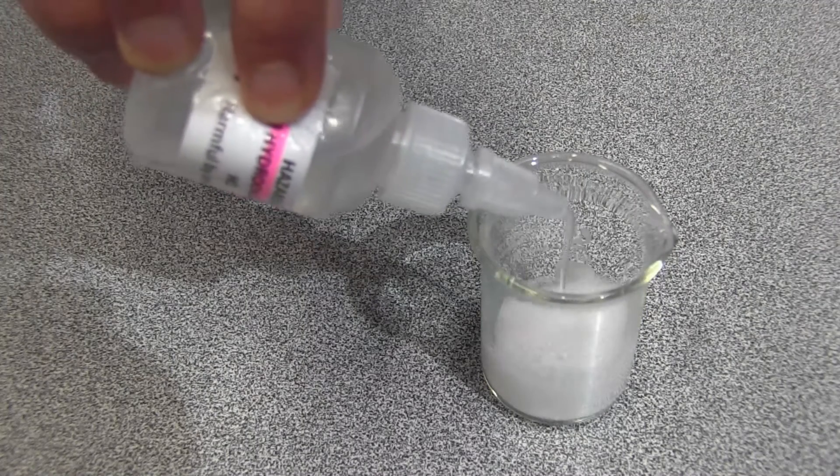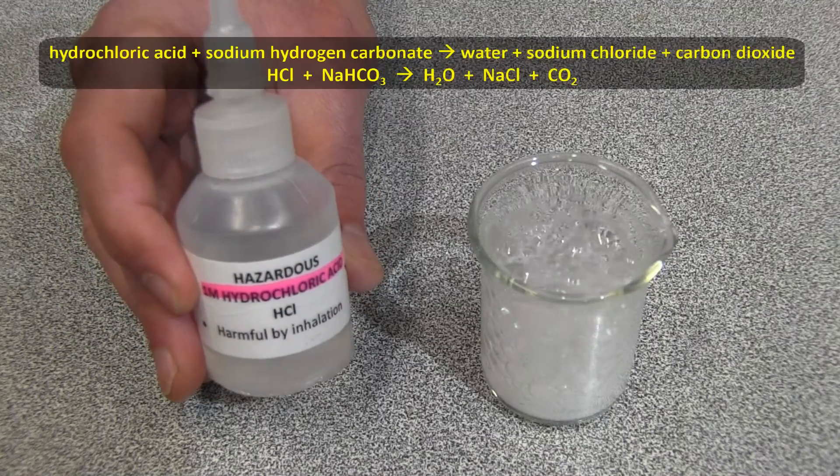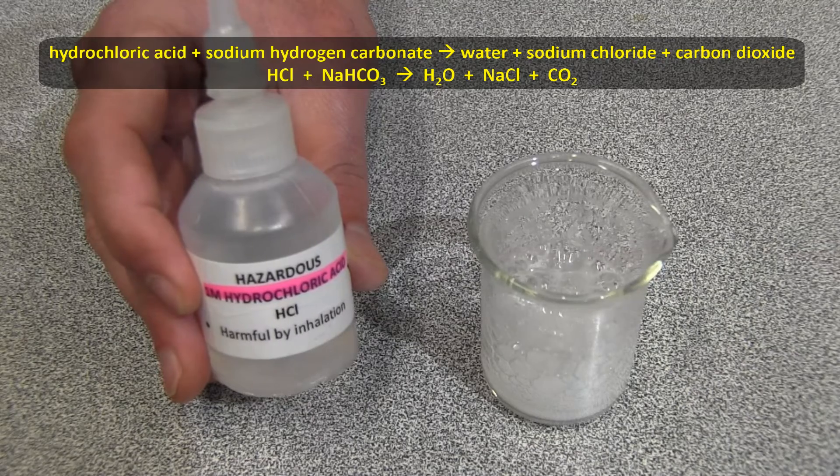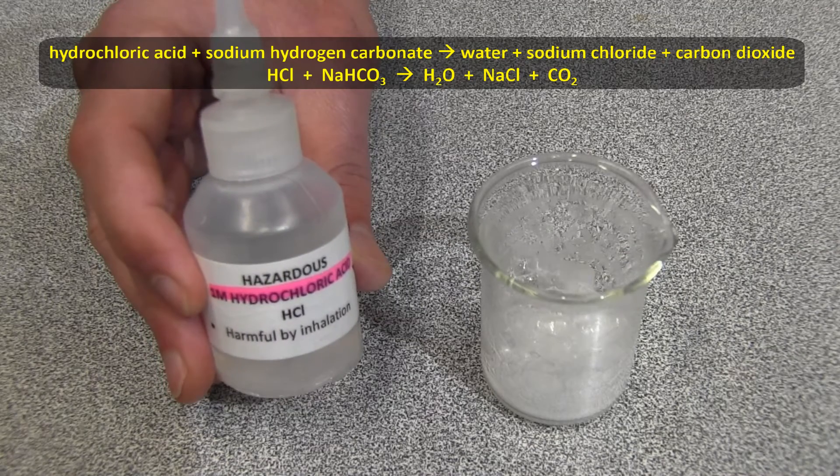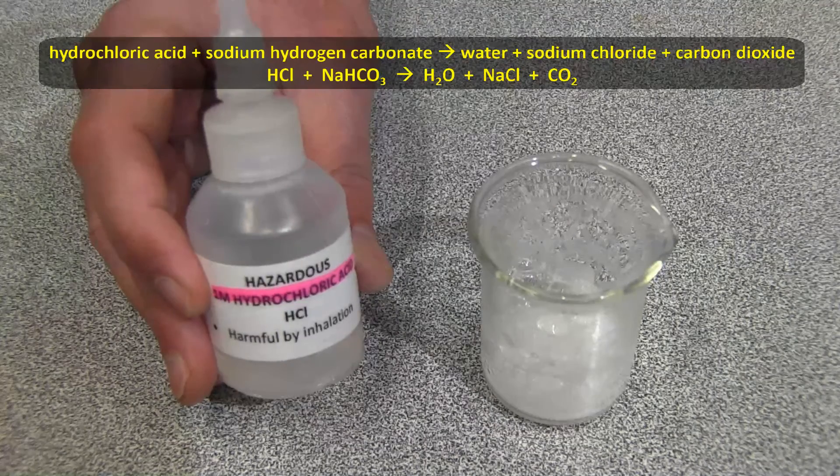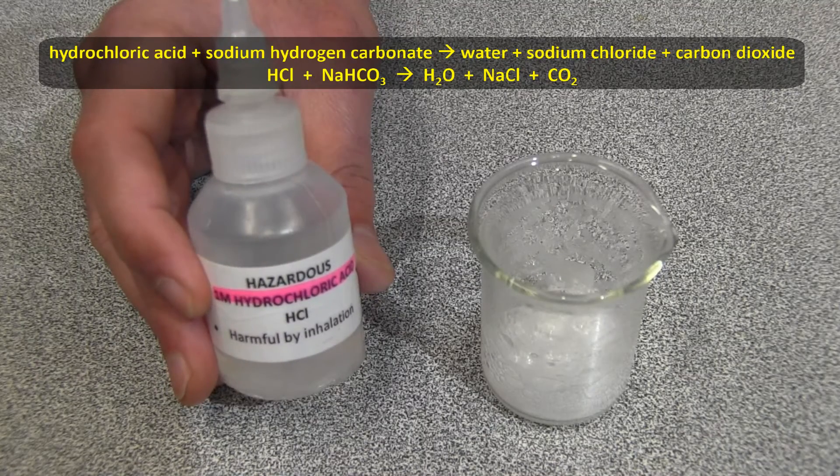If I add some hydrochloric acid to the bicarb soda, they both neutralize each other. Hydrochloric acid plus sodium hydrogen carbonate produces water plus sodium chloride, a salt, plus this time we also get carbon dioxide, most of which just floats away.